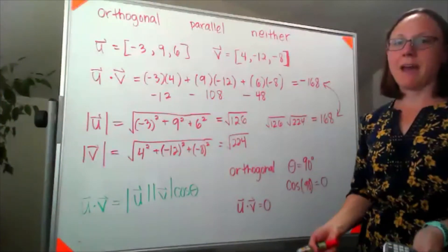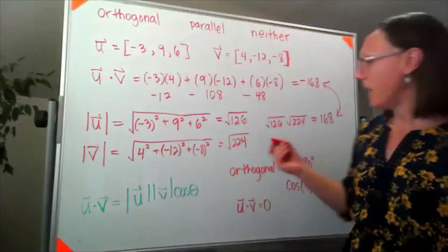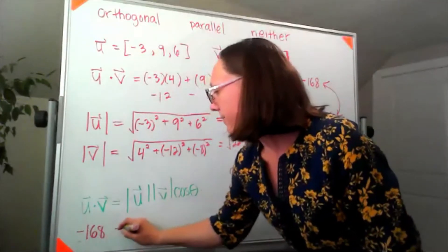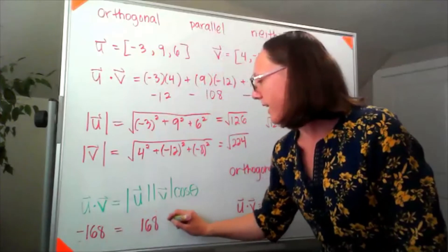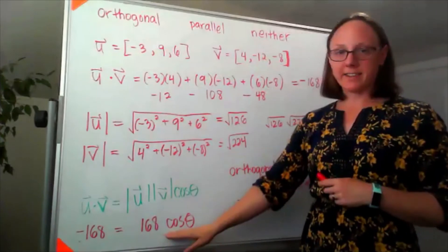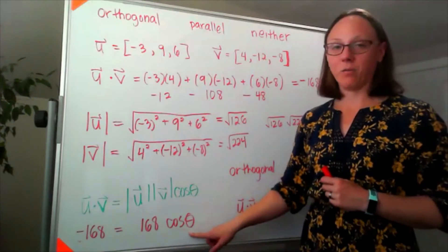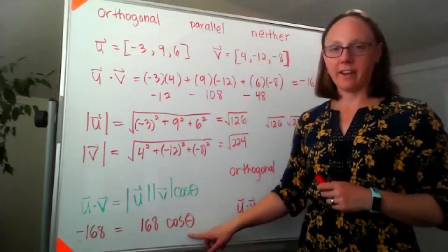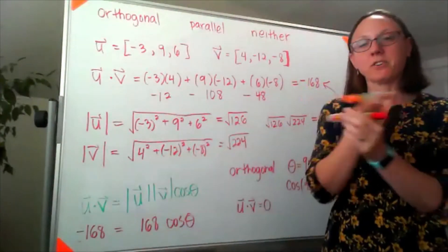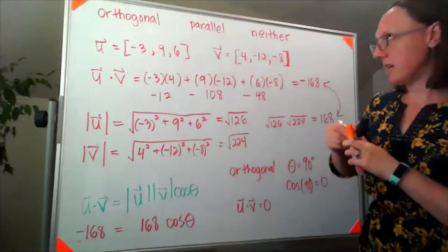Because these two numbers match I know that if I plug them into this equation down here, we just saw that negative 168 is equal to 168 times cosine of the angle between them. Well this tells me that cosine of theta has to be equal to negative 1, which means if cosine is negative 1 then I'm at 180 degrees. So these two vectors are pointing in opposite directions but they're still parallel. So this one is indeed parallel.